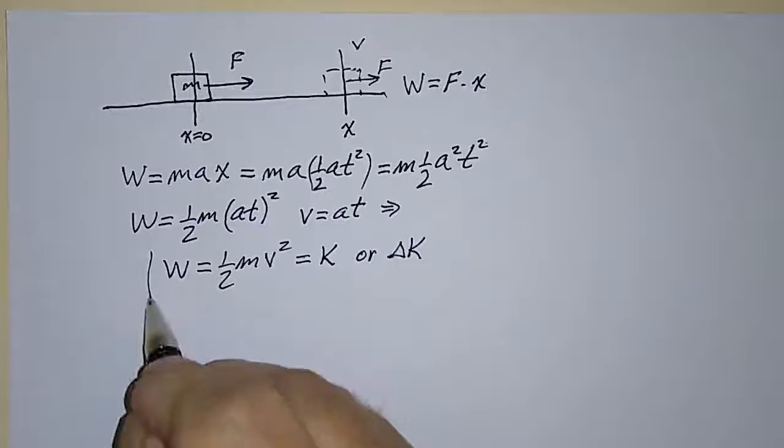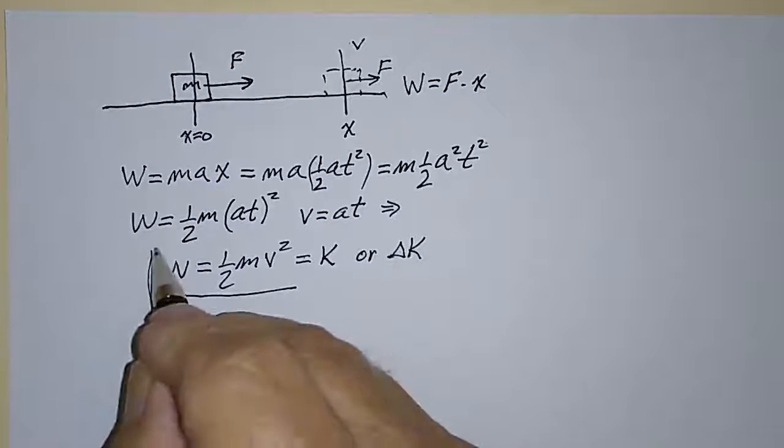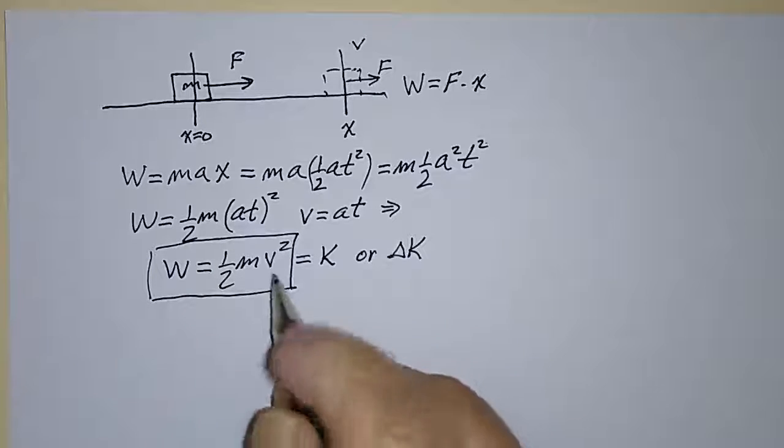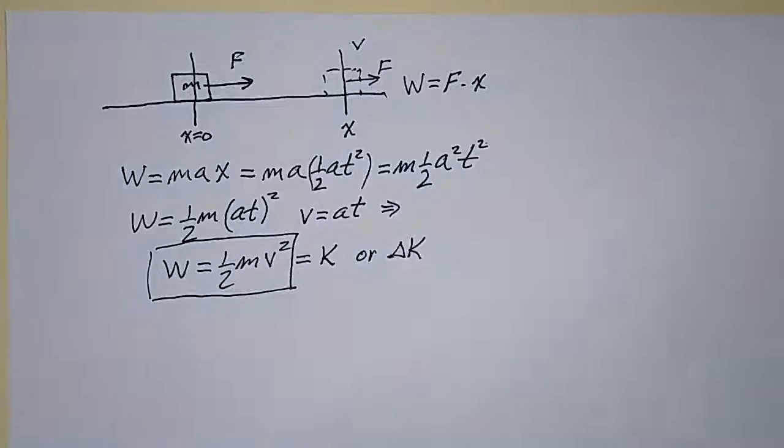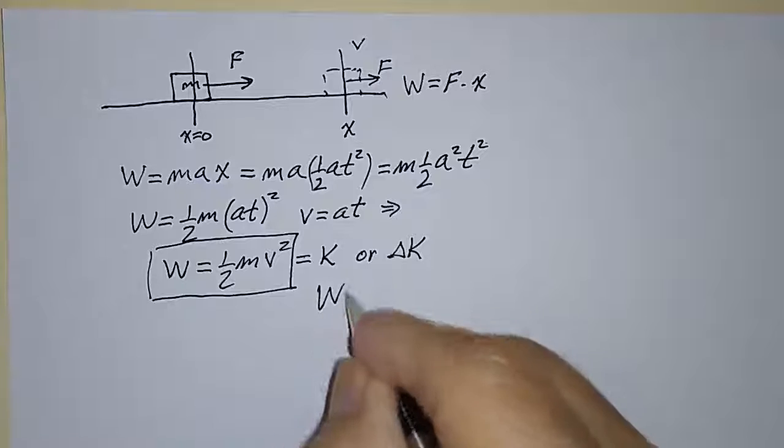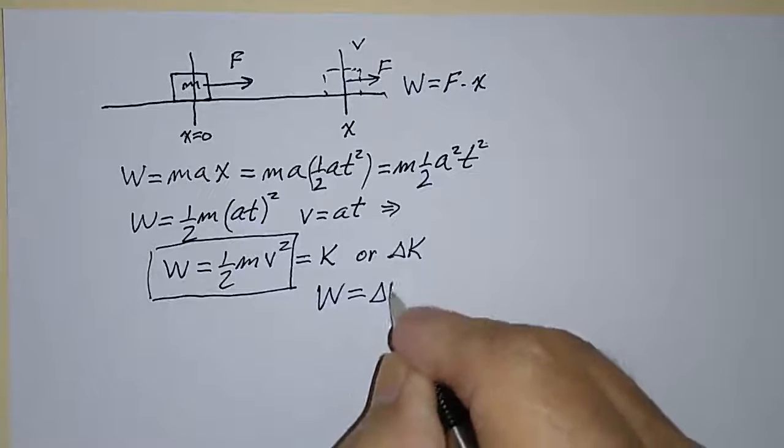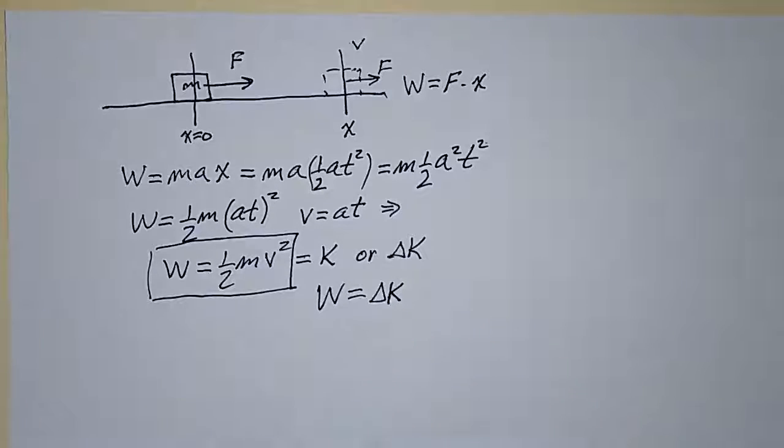therefore the work done on the object is equal to the change in kinetic energy. Work done is equal to delta K. Okay, that's the work-kinetic energy theorem.